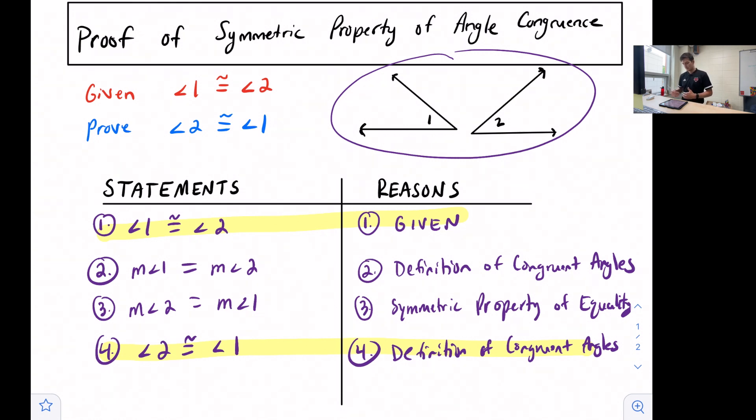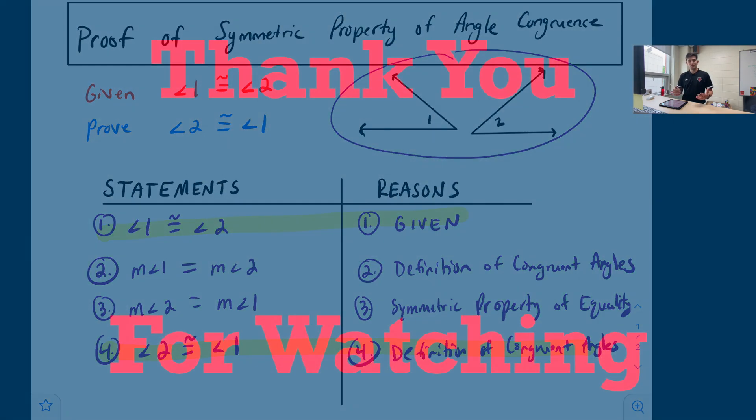On the right side, some things that you could write for reasons: definitions, postulates, or any kind of theorem that we learned throughout geometry. And that is a two-column proof.